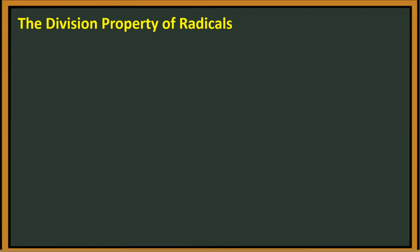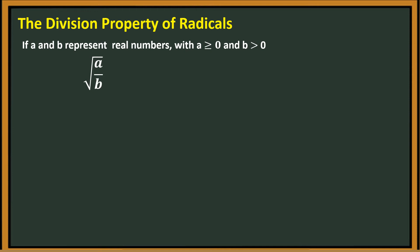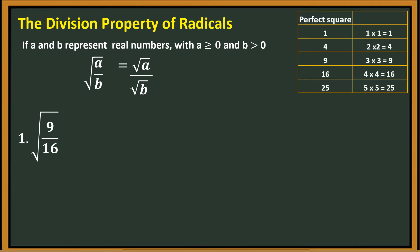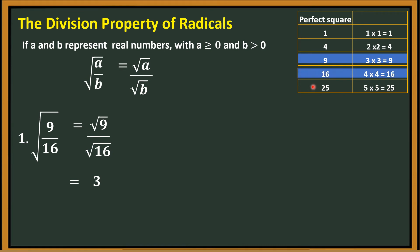The second property of radicals is the division property. If a and b represent real numbers with a greater than or equal to 0 and b greater than 0, then the square root of a over b equals the square root of a over the square root of b. For example, the square root of 9 over 16. We separate it as square root of 9 over square root of 16. Since 9 and 16 are perfect squares, the square root of 9 is 3 and the square root of 16 is 4. Therefore the final answer is 3 over 4.